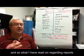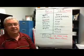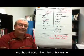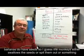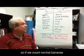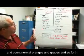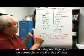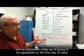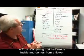What I have read is that out of the jungle somewhere, bananas do have seeds — I guess the monkeys either swallow the seeds or spit them out. So if we count normal bananas, normal oranges and grapes and so forth, and we're agreeable, we're going to agree to this definition for now: a fruit is anything that has seeds inside and comes from a flower.